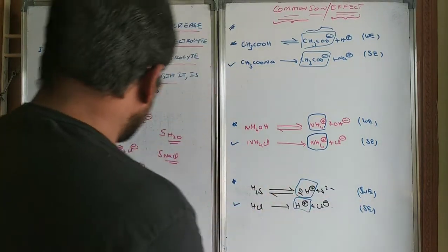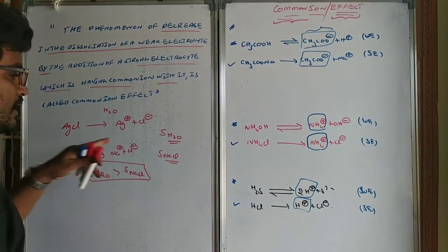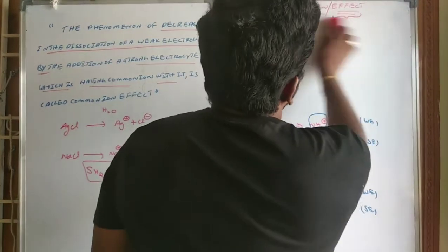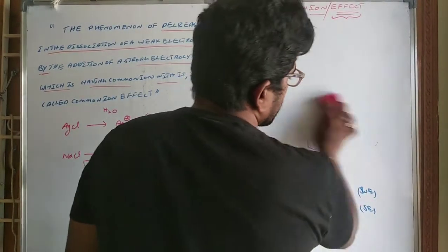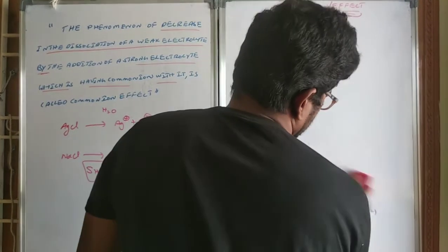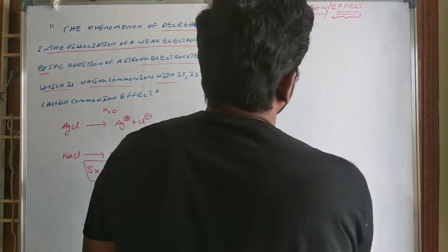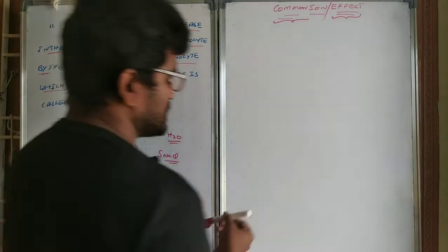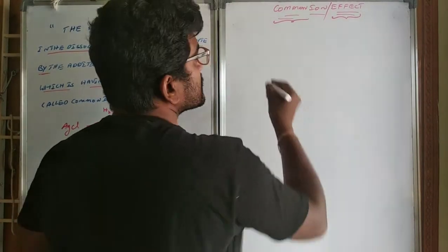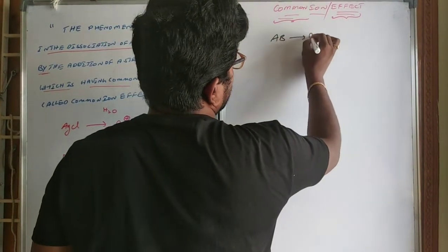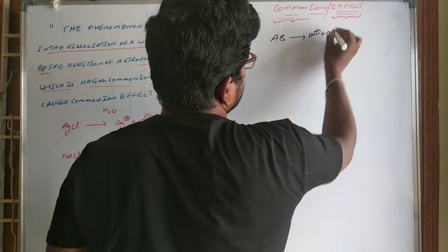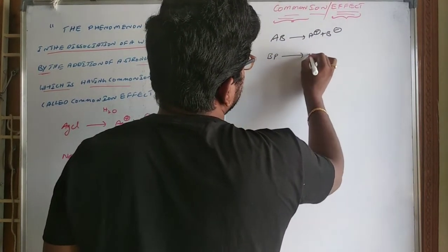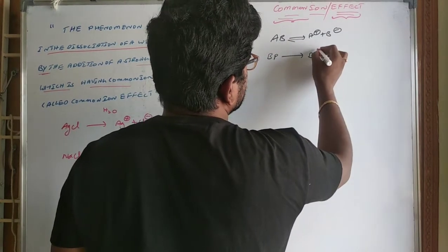Let us find the solubility of a particular salt in presence of a common ion. Let us take these examples. Salt AB dissociates as A⁺ and B⁻.